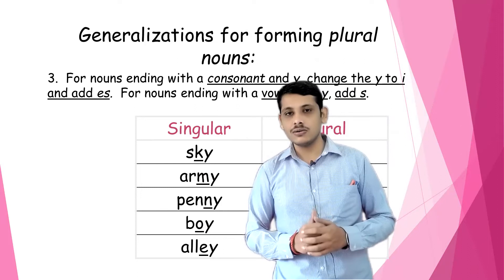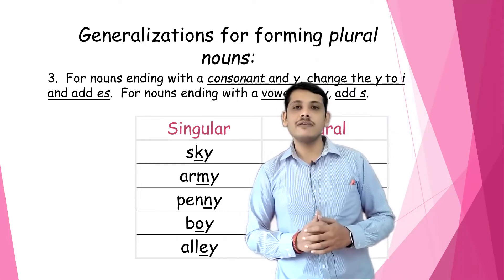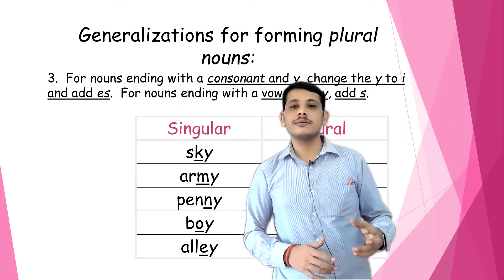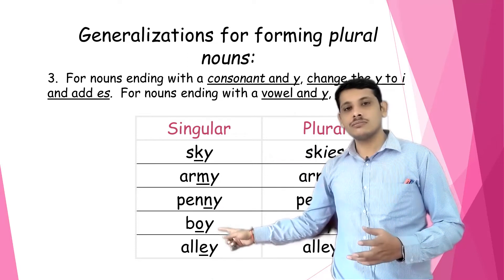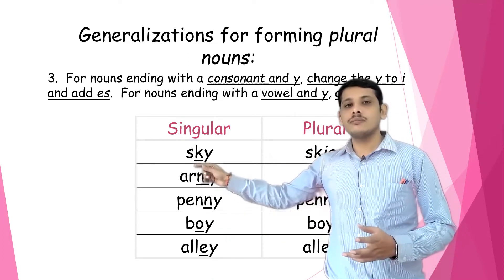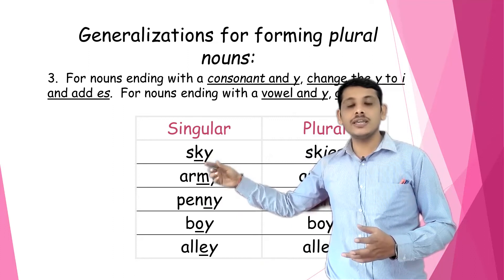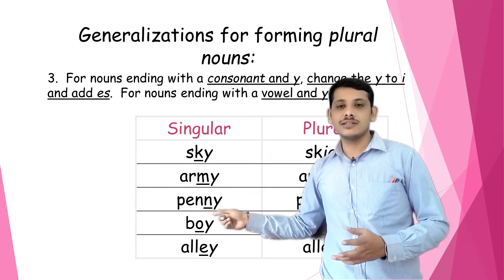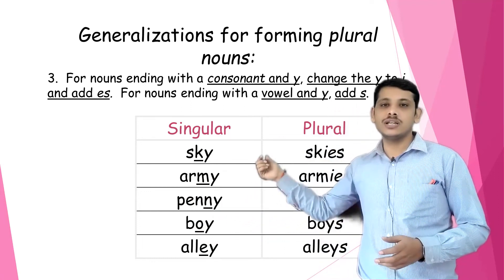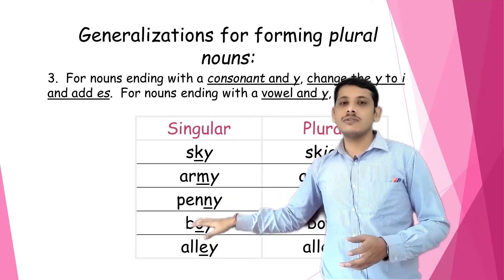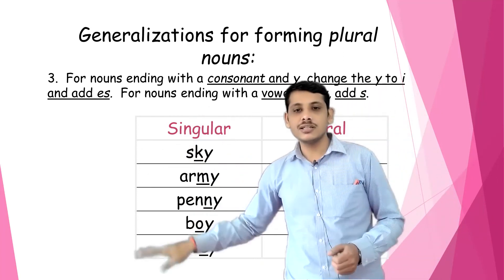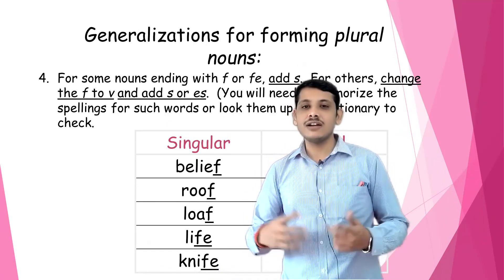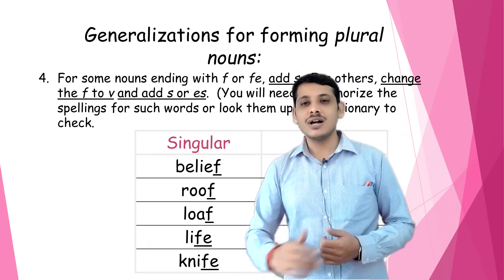As I said in the earlier video, these are generalizations to make plurals — not strict rules, because not all nouns follow them. There are some exceptions. For example, 'monkey' — m-o-n-k-e-y. Before 'y' there is 'e', so we just add 's': monkey → monkeys. The 'y' is not converting into 'i'. Since they don't apply everywhere, we call them generalizations, not rules. There are many more rules that we'll see in the next video. Till then, bye and have a good day!